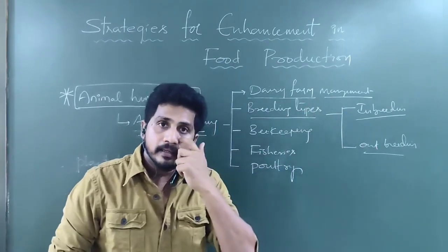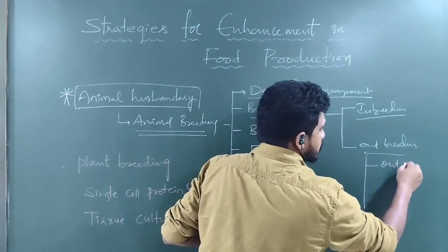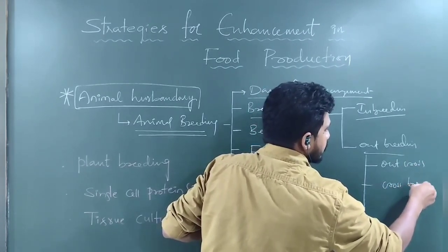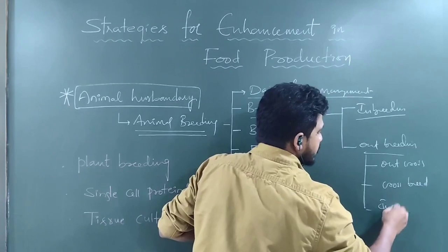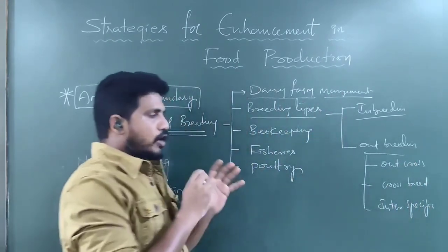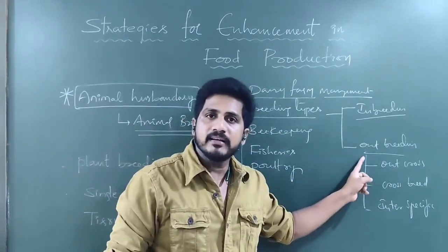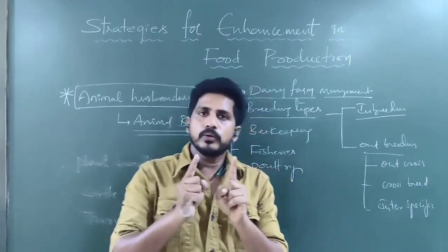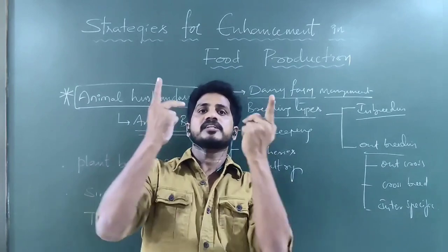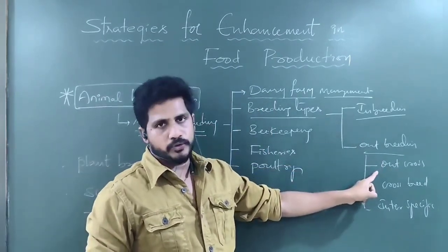Outbreeding, by contrast, consists of three types: outcross, crossbreed, and inter-specific hybridization. Outcross is the type of outbreeding in which two animals of the same species are mated but their ancestors are different — the absolute opposite of inbreeding.